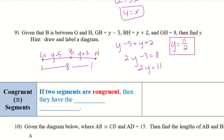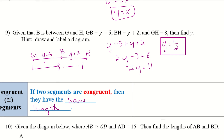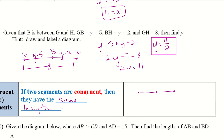Congruent segments: if two segments are congruent, they have the same length. If AB is congruent to BC, this line is congruent to that line. We show congruence by drawing a small tick mark through both segments. If AB is 5, then BC also needs to be 5.